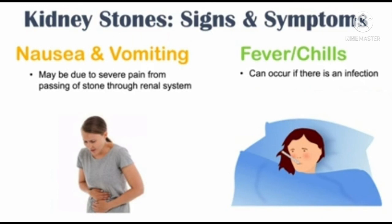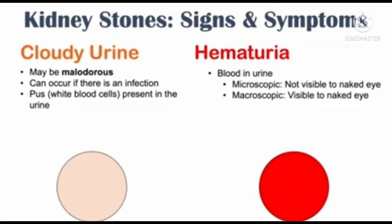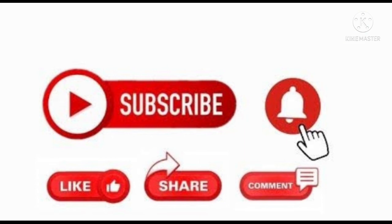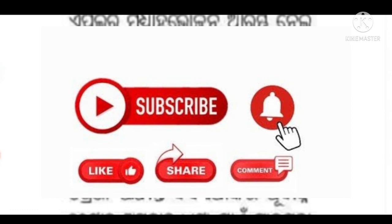You can also suffer with fever and chills. Hematuria, which is blood in the urine, may be present. Cloudy urine may also occur; the urine color may be cloudy. This can occur if there is an infection of the kidney, and past white blood cells are also present in the urine. Hematuria can be either microscopic or macroscopic. These are the symptoms of kidney stones.